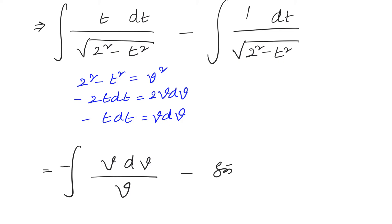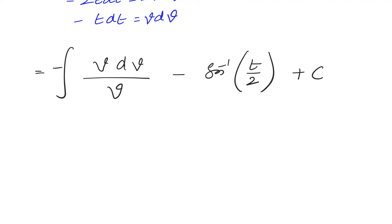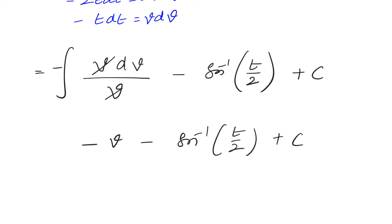For the second part, the integral of 1 over square root of a squared minus x squared is sin inverse (x/a). Here x is t and a equals 2, so it gives sin inverse (t/2). From the first integral we get minus the integral of dv, which is minus v. So the combined result is minus v minus sin inverse (t/2) plus C.